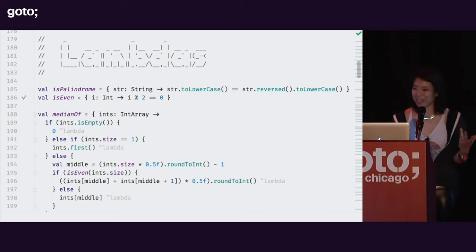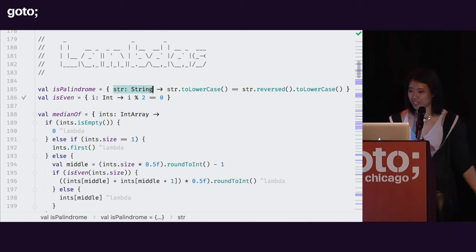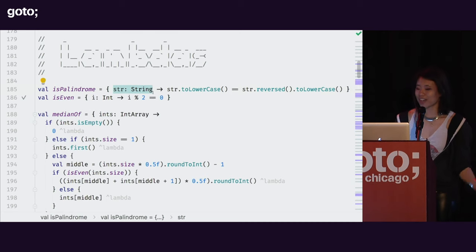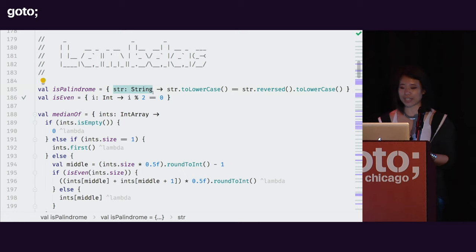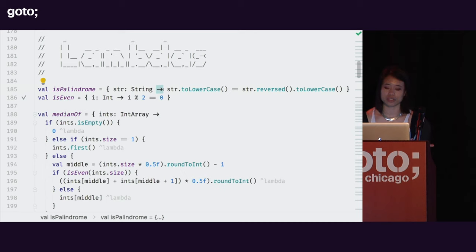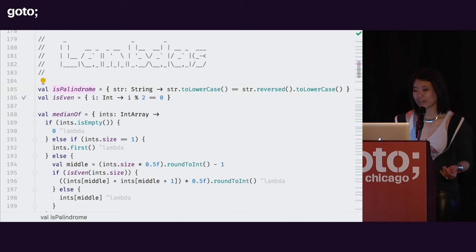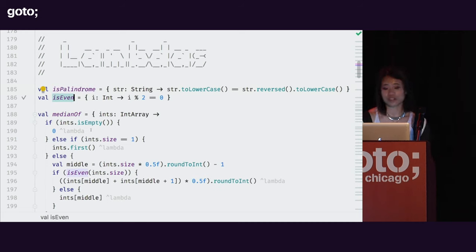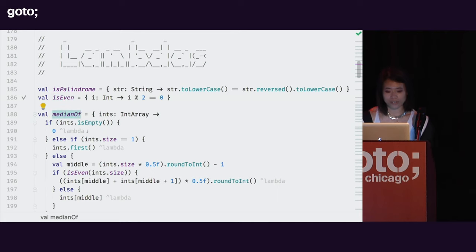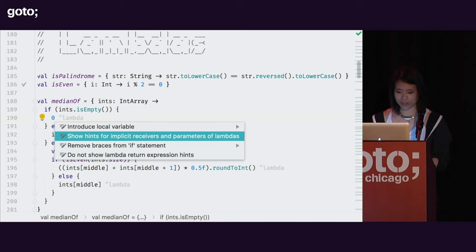Lambdas are a chunk of code in curly braces — that's it. This chunk of code does look a bit function-esque. It has a parameter list with parameter names and types, a right arrow, and following the right arrow is the actual body of our function literal. I have here a couple of lambdas assigned to immutable vals — one that determines whether a string is a palindrome, and one that determines whether an integer is even.